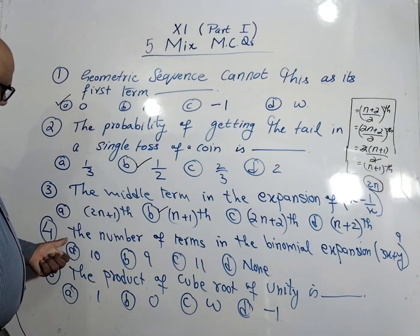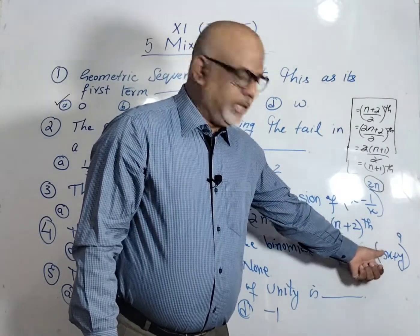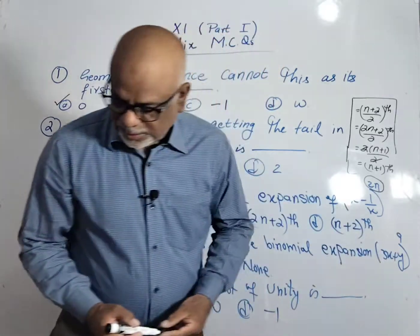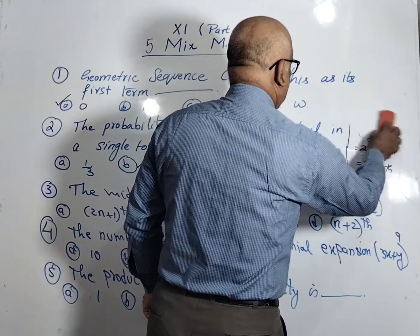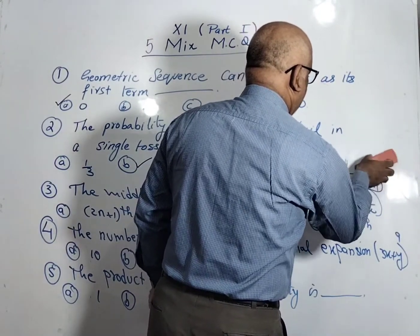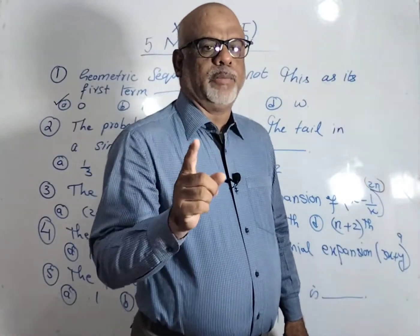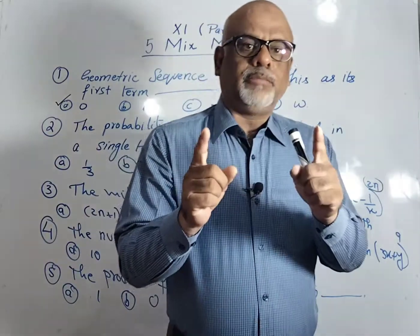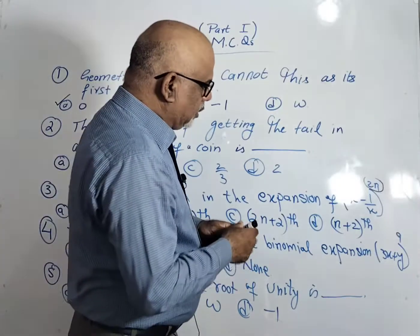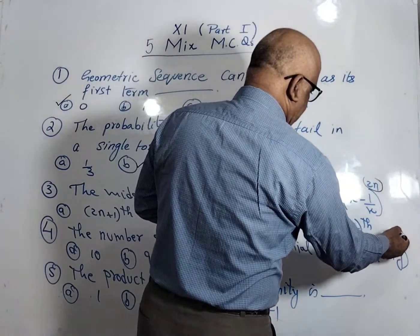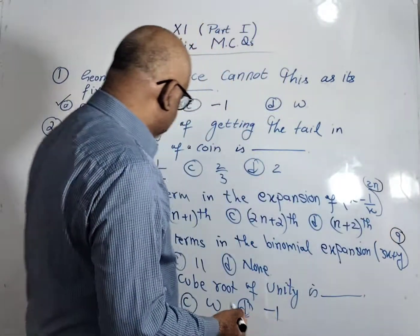Now come to the fourth part here. The number of terms in the binomial expansion of (3x plus y) power n, power 9. Dear students, remember that when we are talking about the binomial formula, when we have to expand the binomial formula, we have a total number of terms are n plus 1. So here we have a power n, so the total number of terms will be n plus 1. That means 9 plus 1, it is 10. So A option is correct.